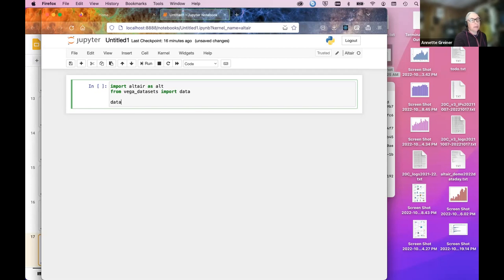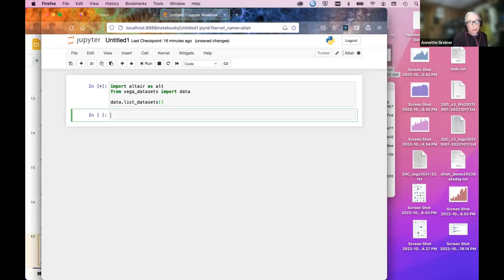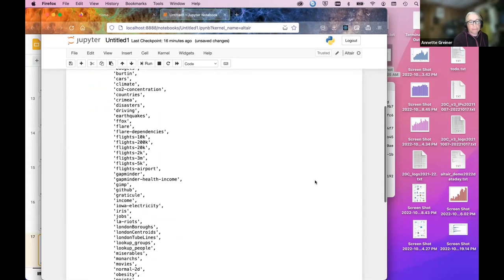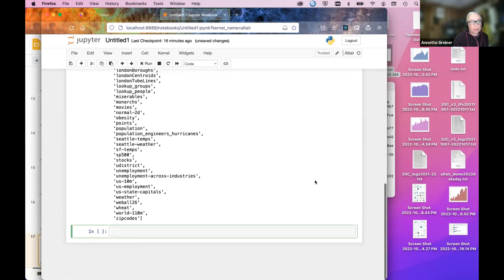And then I'm going to pull in the Vega Datasets. And then at this point, we can list it out. And you can see how many different data sets are available. Oh, what have I done wrong? There we go. That was just a little slow. So it's a pretty huge list.